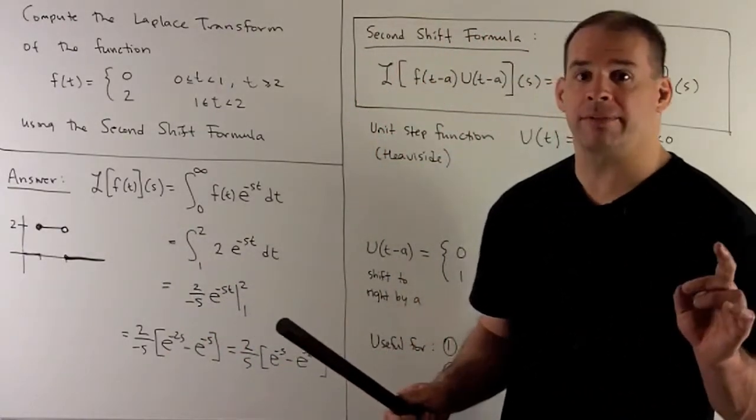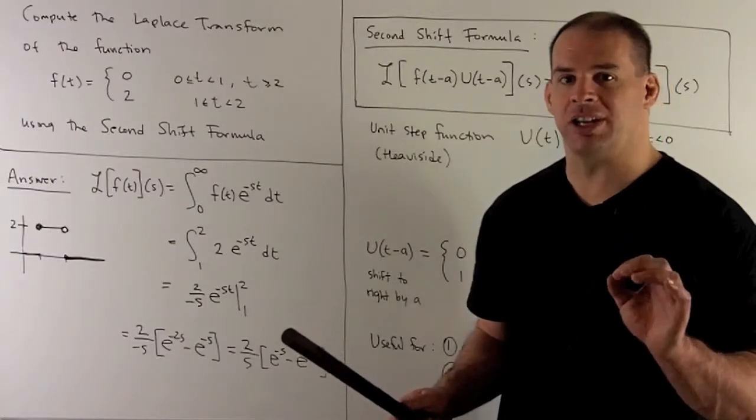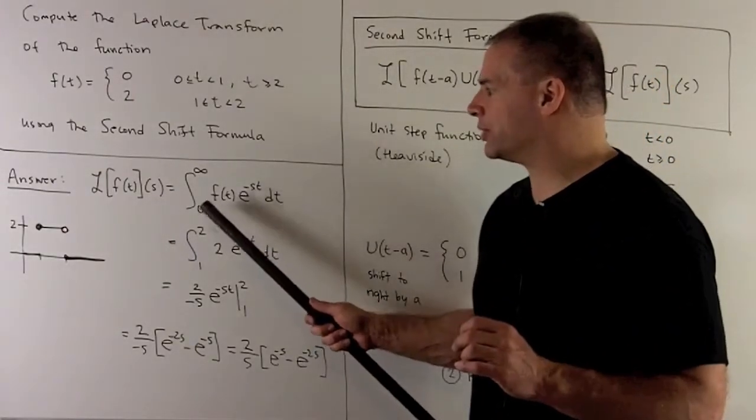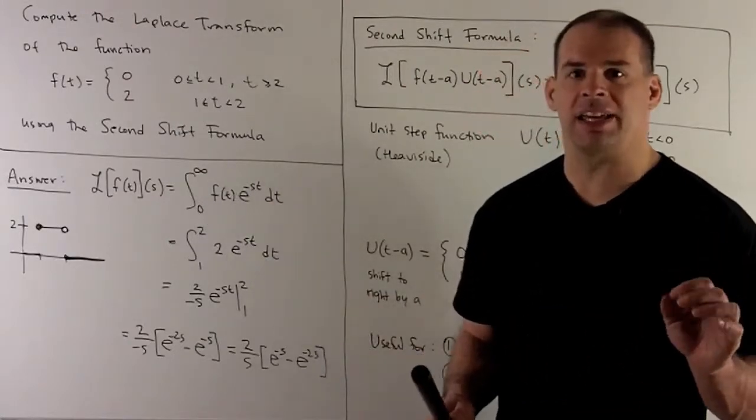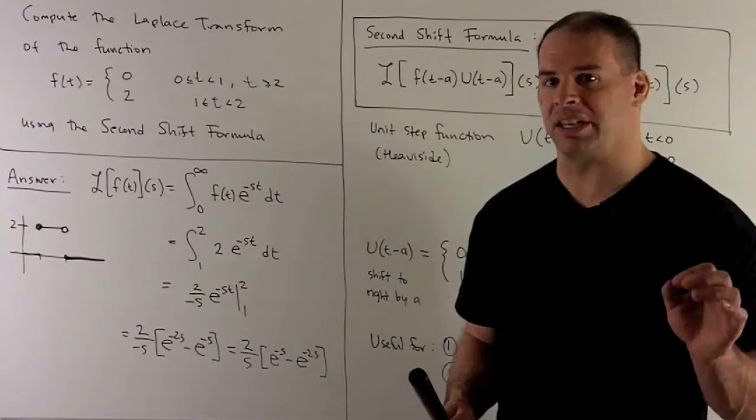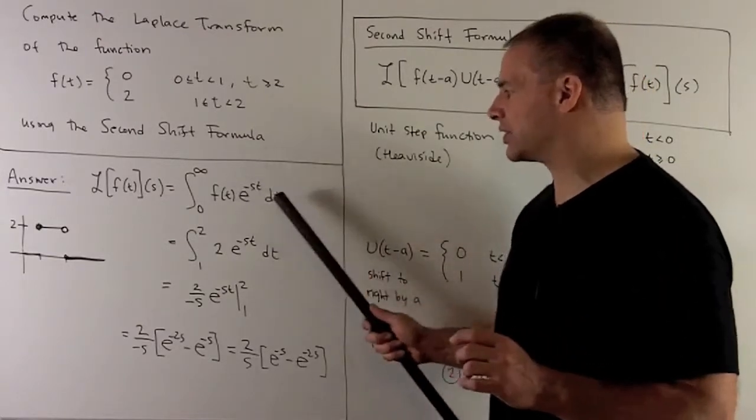Laplace transform of f, that's going to give us back a function in terms of s. We define as improper integral from 0 to infinity f of t, e to the minus st dt. So we're integrating with respect to t, we're going to treat the s as a constant when we integrate.